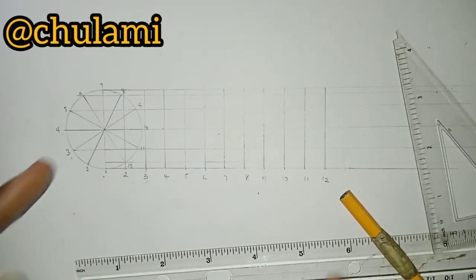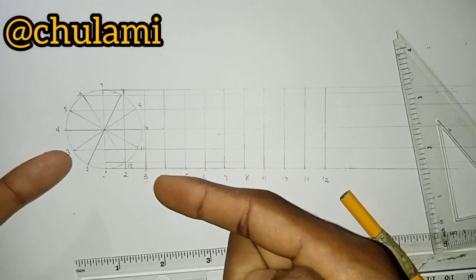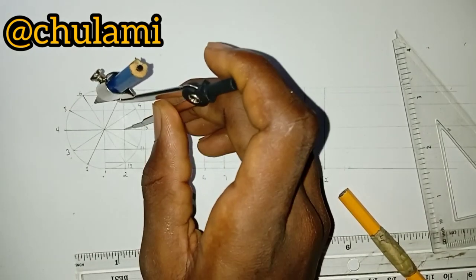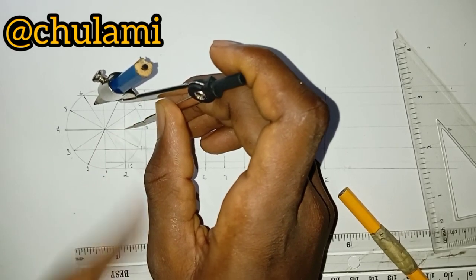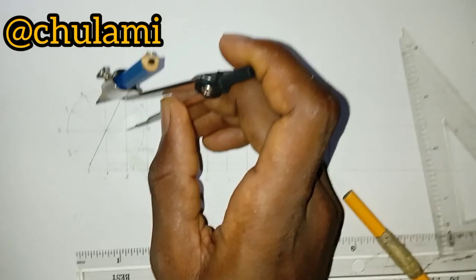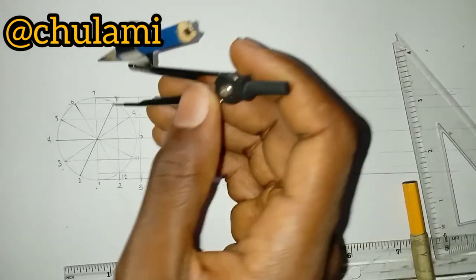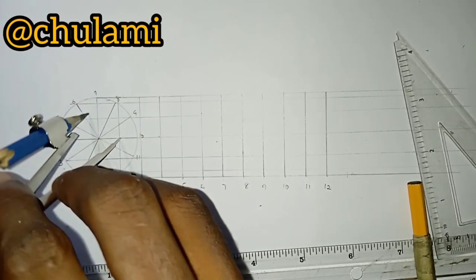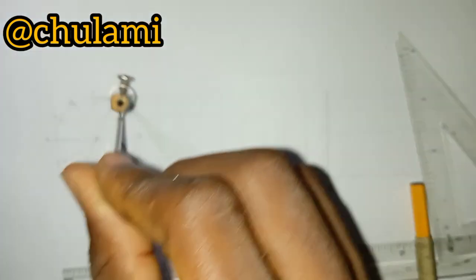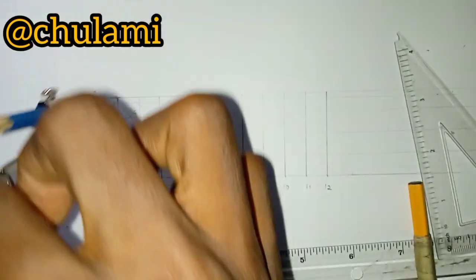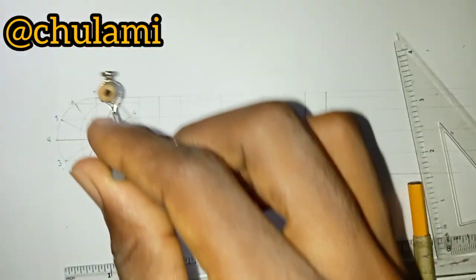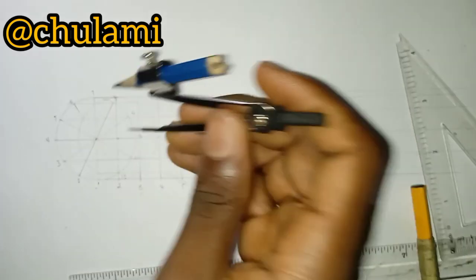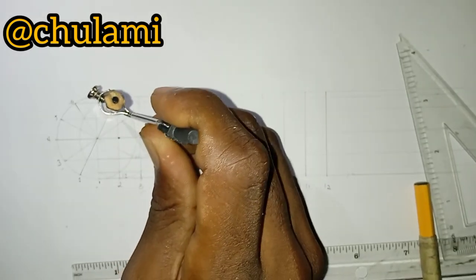I'll advise you to put a paper on that to avoid the compass from slipping. If you check, my compass was trying to slip because I don't have paper on it. Put paper or carton there to avoid the compass from slipping. Let me get the paper, put it there, pivot here, and draw this circle.